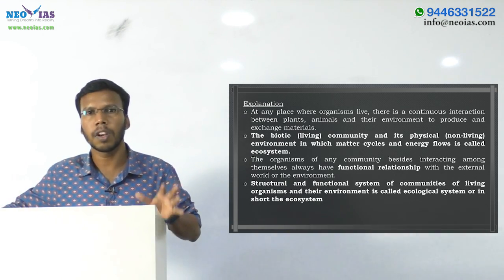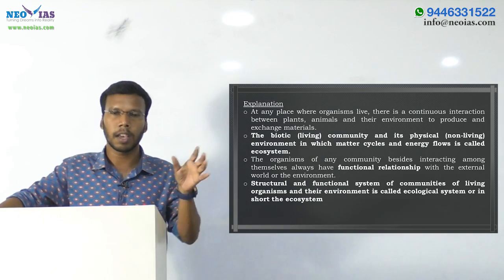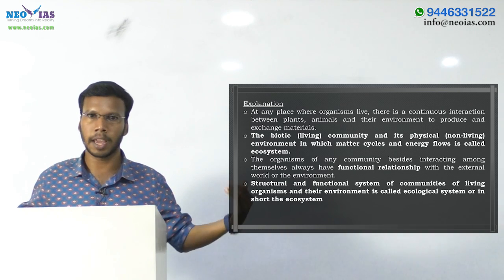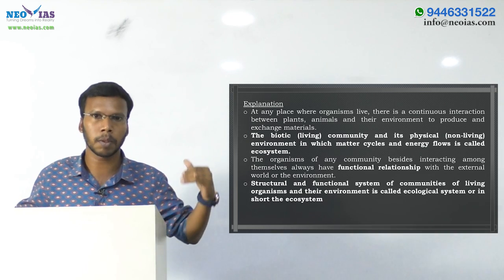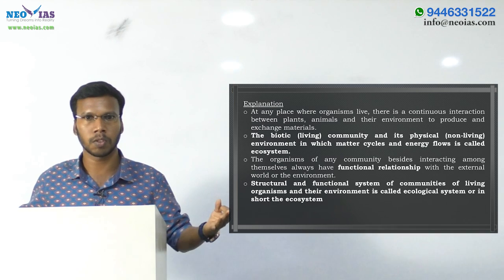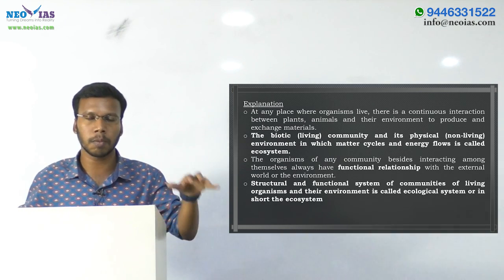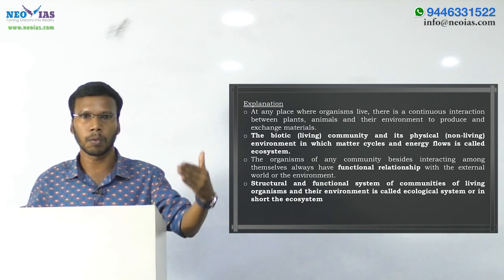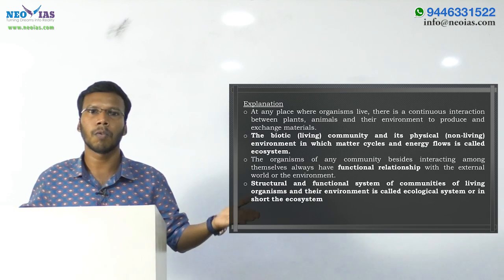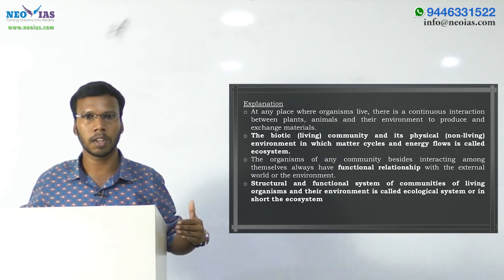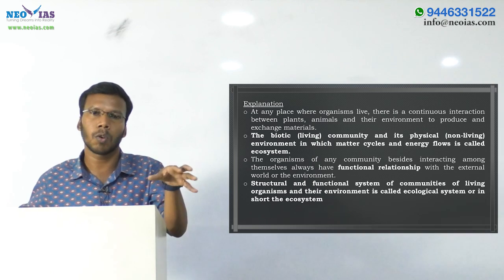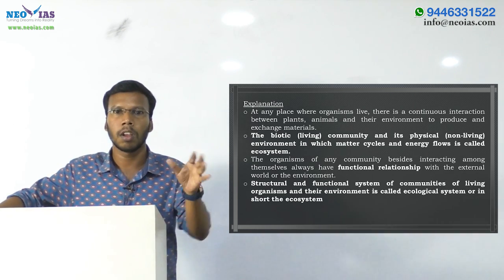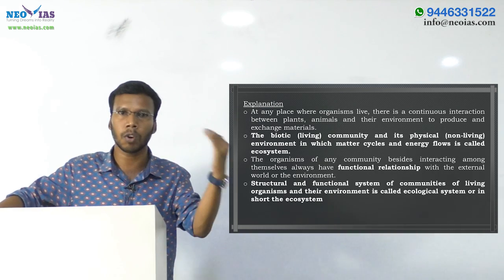The structural and functional system of communities of living organisms and their environment is called an ecosystem. Regarding the structure: an ecosystem has producers like plants, then consumers — those who consume food from producers — and within consumers we have herbivores, carnivores, and omnivores. The components of the ecosystem have a definite structure. For example, herbivores like rabbits eat producers; carnivores like tigers eat deer or rabbits, but deer won't eat the tiger. So there is a definite structure in the ecosystem. That's why we say this is a structural and functional system.